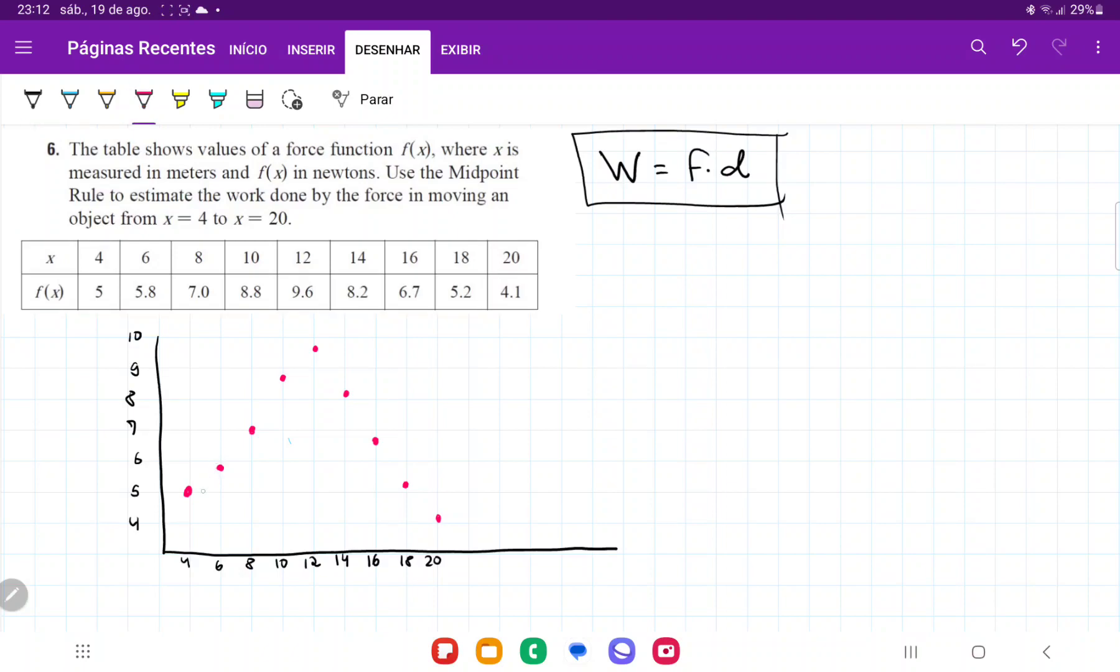What we could have done is take each of these values and say that whatever force was applied for 2 meters in this interval. Then this force is applied for 2 meters in that interval, and so on. But this is not the midpoint rule.